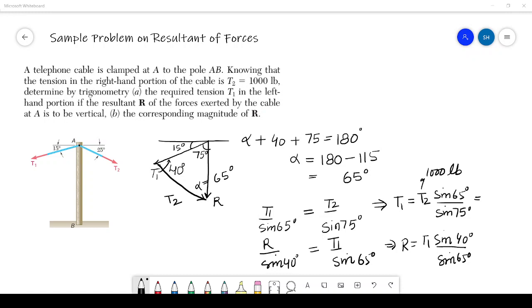So the solution comes out to be T1 should be 938 pounds.